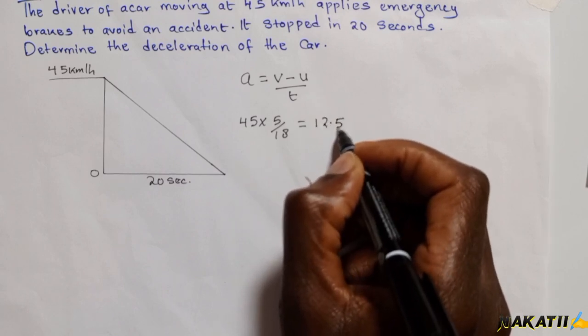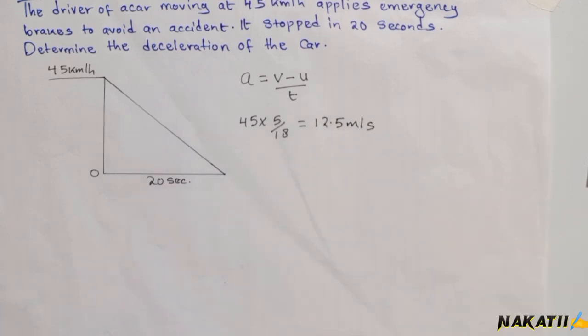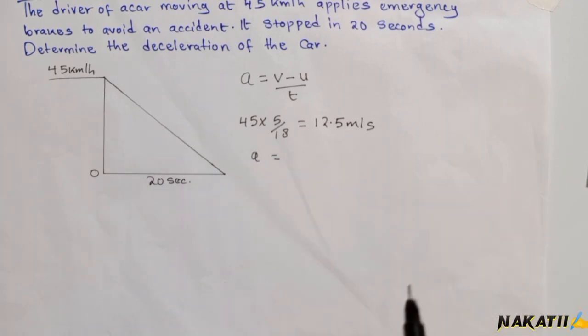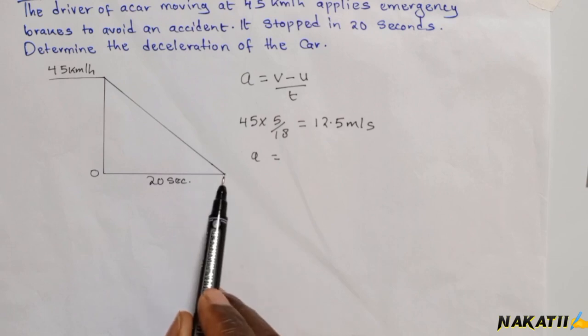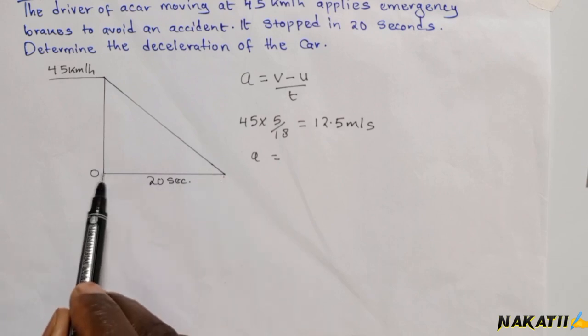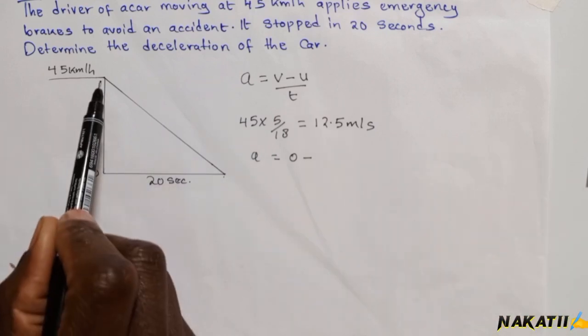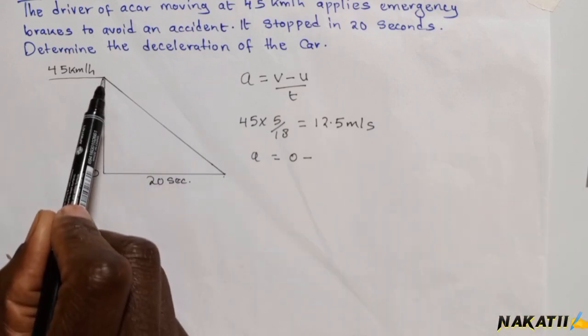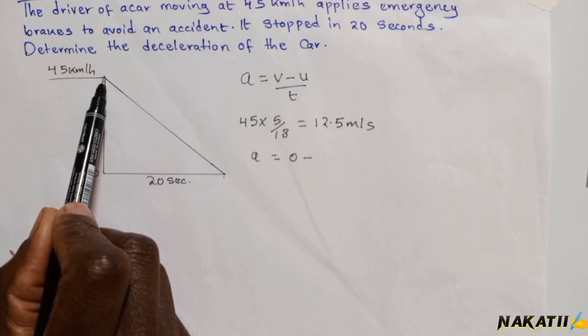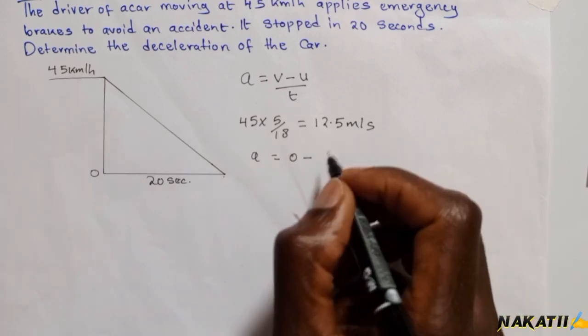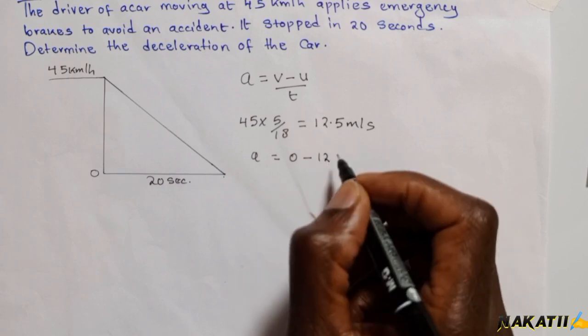Therefore, acceleration equals final velocity—it stopped, so the velocity was zero—minus initial velocity. When it applied brakes, the velocity was 45 km/h, which we converted to 12.5 m/s. So the initial velocity was 12.5 m/s.